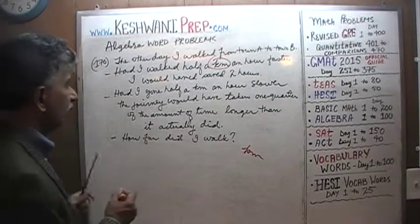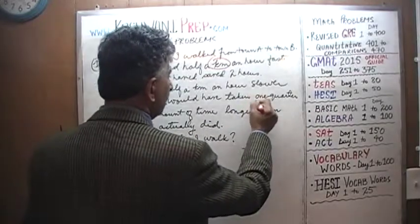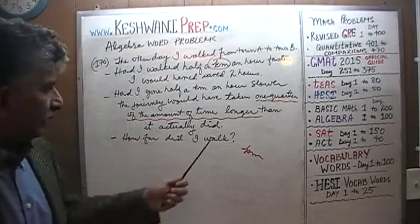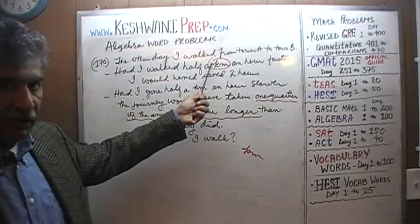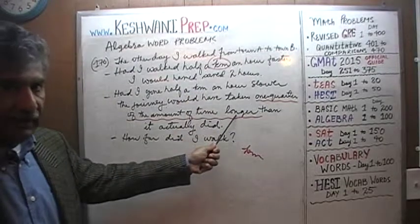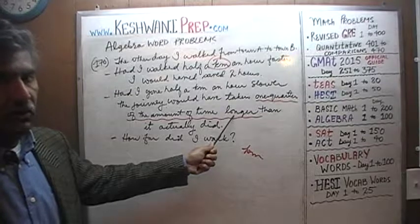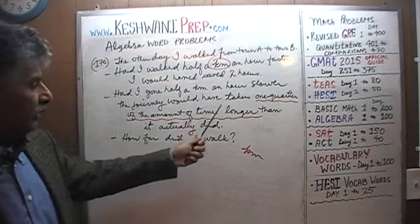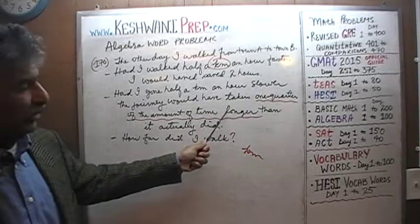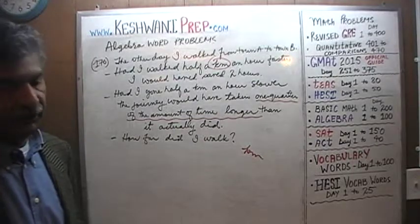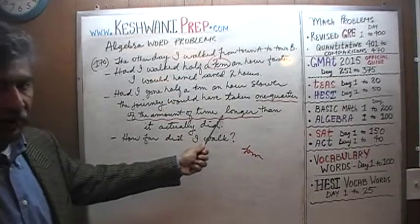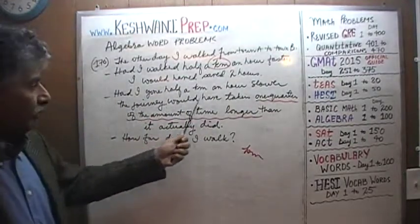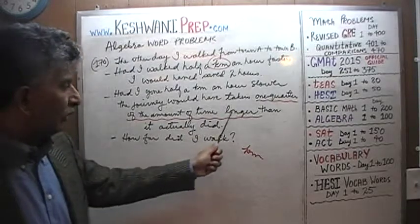Do you understand this part? The journey would have taken one quarter of the time longer. For example, if the journey took eight hours in the first scenario, then one quarter of the time longer means it will take eight plus a quarter of eight, which is two — so ten hours. If the first part took four hours, here it will take four and then one quarter of four, which is one — five hours. If the first part took one hour, the same distance will take one hour and 15 minutes. The journey would have taken one quarter of the amount of time longer than it actually did.